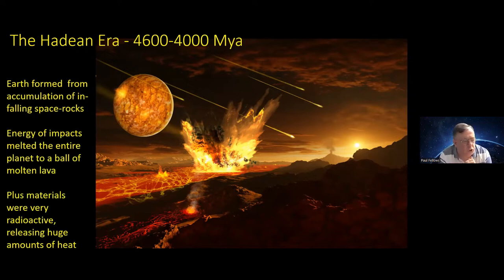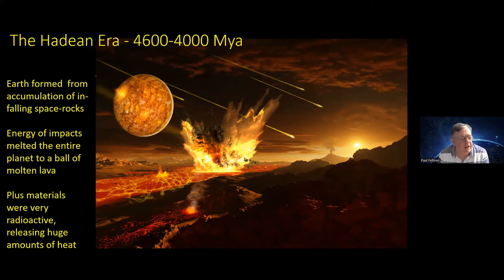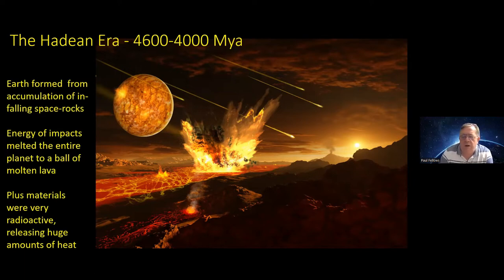Many radioactive elements present in the original solar nebula had much shorter half-lives than today. Aluminium-26 has a half-life of 700,000 years, so in the first few million years the Earth was very radioactive. Potassium-40 has a 1.25 billion year half-life and still makes your bananas mildly radioactive today. The short half-life, highly radioactive elements contributed enormously to heating the early planet.